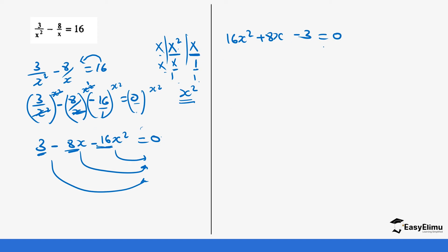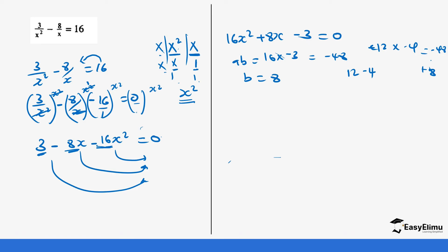Now A×B is 16 times negative 3, which is negative 48, and our sum B is positive 8. We need two numbers that multiply to negative 48 and add to 8. Those numbers are 12 and negative 4: 12 times negative 4 equals negative 48, and 12 plus negative 4 equals positive 8.